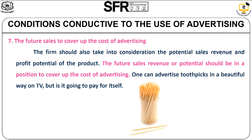The seventh condition is future sales must cope with the cost of advertising. The manufacturer has to incur costs for advertising, so the cost of advertising has to yield results for the forthcoming years as well. For example, if a manufacturer advertises a toothpick, the cost of advertising has to cover the sales for future years also.